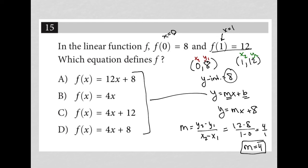So now I know my m value and I know my b value. So just putting that all together, I'd have y equals 4x plus 8. And therefore, the correct answer here is choice D.